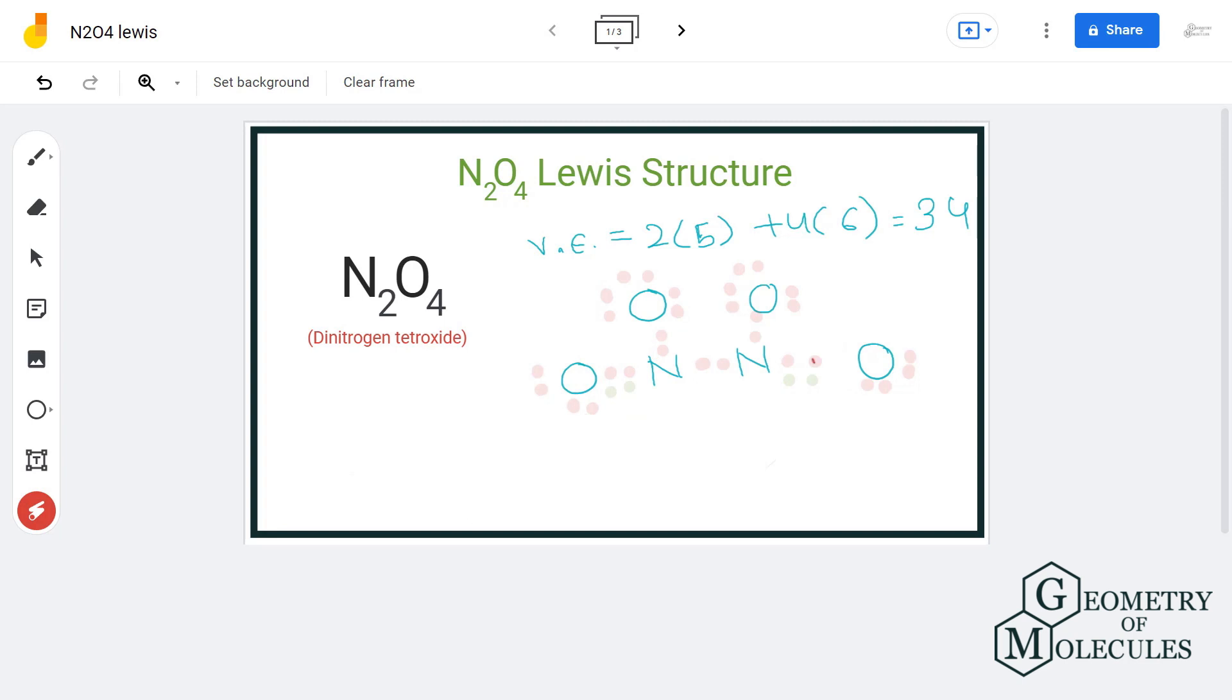So let us calculate the formal charge of each atom just to confirm that this is the best possible Lewis structure. For oxygen, we have six valence electrons minus six non-bonding electrons minus two bonding electrons divided by two, that will give us a formal charge of minus one.